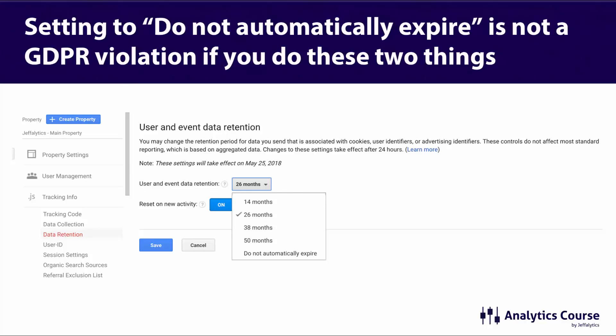Setting data to not automatically expire under your data retention policy is not a GDPR violation if you do these two things. Number one: you allow users to delete their data easily from Google Analytics. Google is introducing a user deletion tool — not available right now but coming in the upcoming weeks — that will allow you to automatically delete people from Google Analytics based on their client ID, user ID, or if you're using apps, the app instance ID.